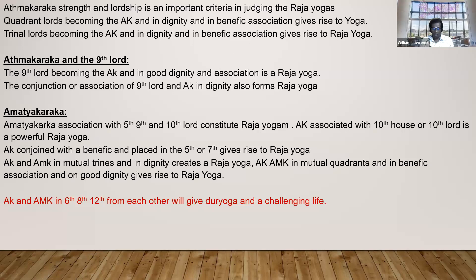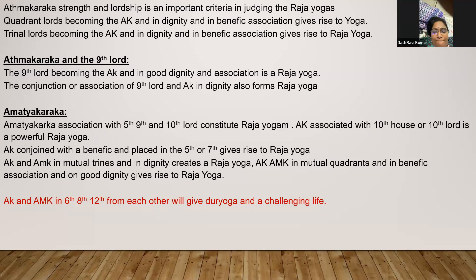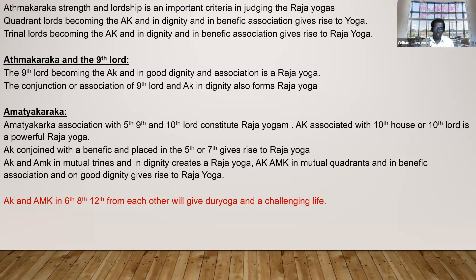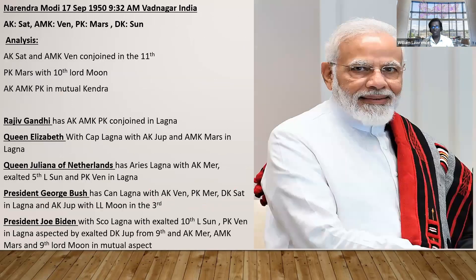Atmakaraka being the 5th, 9th, or 10th lord — or even Lagna lord — is more special, in ascending order. If it is in exaltation or Swakshetra and well placed in a Kendra-Kona it becomes extremely very special. For the basics: Kendra-Kona lords combine — and then when analyzing, also see who the Kendra-Kona lords are and whether they are the Atmakaraka, Amityakaraka, Putrakaraka, or Darakaraka. Let's go to an example chart to understand better.